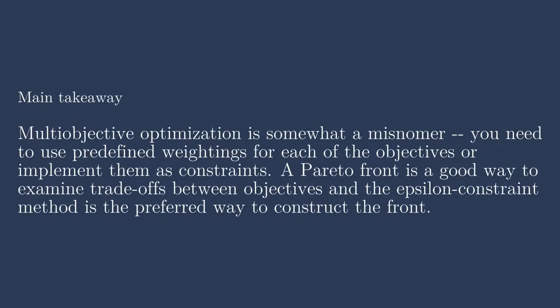So the main takeaways concerning multi-objective optimization is that it's somewhat of a misnomer. If you actually care about multiple objectives simultaneously, you need to have some predefined weightings or treat them as constraints. A Pareto front is a good way to examine tradeoffs between objectives, and the epsilon constraint method is the preferred way to construct the front. The notebook activities associated with this lecture will help you construct your own Pareto front for any given design or model that you're looking to examine in more detail. Thank you for watching.